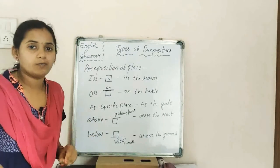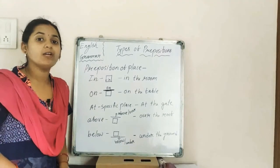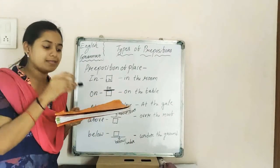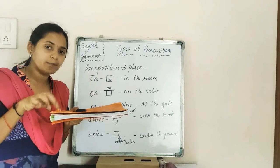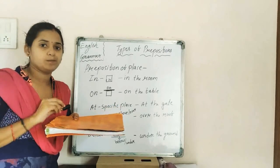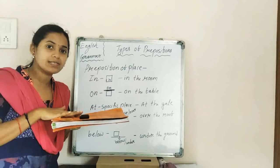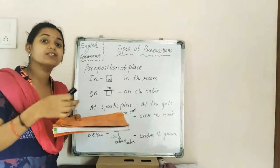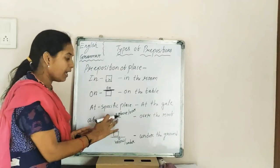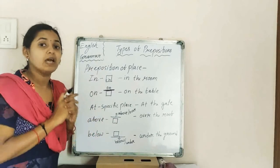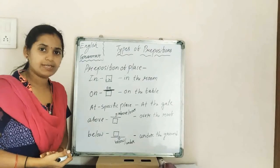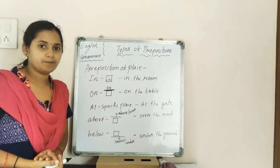Now 'above.' The difference between 'on' and 'above': if a cap is resting on a book, we say the cap is on the book. But if the cap is at any point above the book without touching it, we say the cap is above the book. 'On' means resting on the surface; 'above' means at any point above that surface. 'Over' can also be used similarly — over the roof, above the gate.